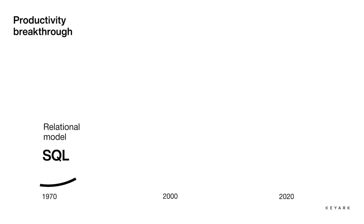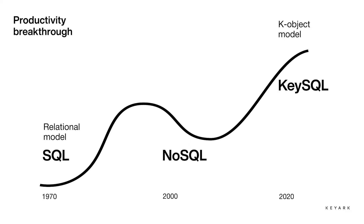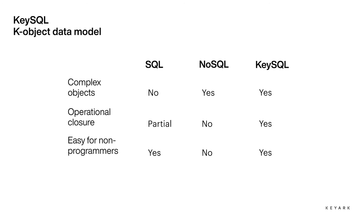KeySQL technology enables an order-of-magnitude productivity breakthrough in handling of non-flat data comparable to the breakthrough achieved by Codd's relational data model and SQL. To accomplish this, the bulk of NoSQL data must be made accessible to non-programmers using a still spartan but more flexible and capacious data model. This model is paired with a next-generation SQL language that is easy to learn, yet fully expressive for handling both flat relational and non-flat NoSQL data.